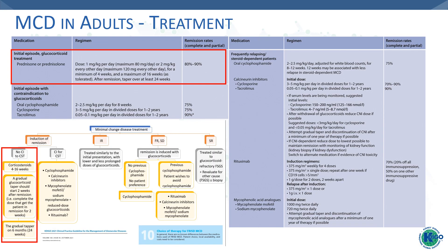Regarding the dose of corticosteroids for induction of remission: 1 mg per kg per day with a maximum of 80 mg per day, or 2 mg per kg every other day with a maximum of 120 mg every other day. This is given for a minimum of 4 weeks and a maximum of 16 weeks as tolerated. After remission, taper over at least 24 weeks. Before tapering, complete the remission-inducing dose for 2 more weeks before starting the taper.